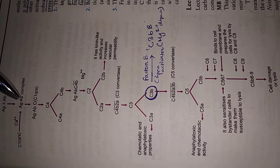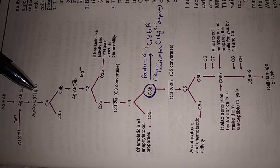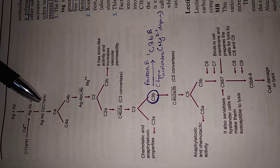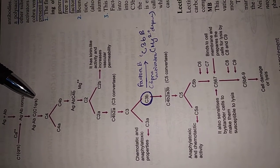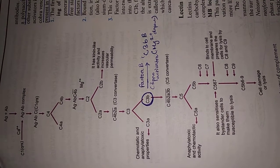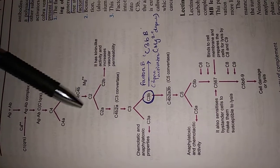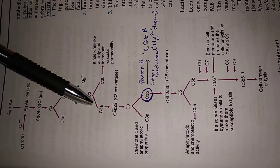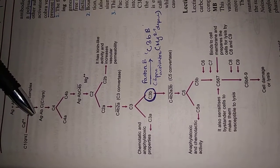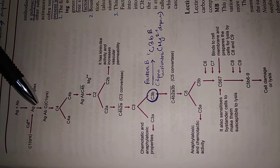As soon as the q component binds to the antigen-antibody complex, it results in activation of the r and s components, which in turn activate complement 4. The sequence to remember is: C1, then C4, then C2, then C3. You should also remember that C1 is activated only in the presence of calcium. If there is a deficiency of calcium, the complement system will not act properly.